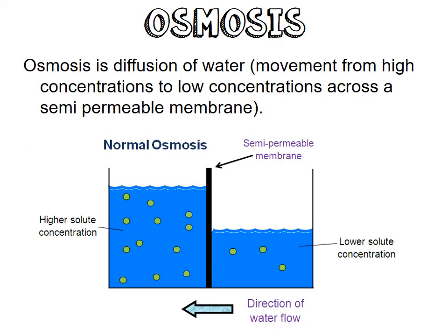Osmosis is the diffusion of water, and it only allows water to pass through. It moves from high to low — every single type of passive transport moves from high to low concentration across the semipermeable membrane. Looking at the diagram, you have a cell with a semipermeable membrane. You have high solute concentration on one side and low solute concentration on the other, so the high concentration molecules move into the lower concentration side.